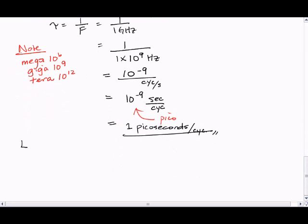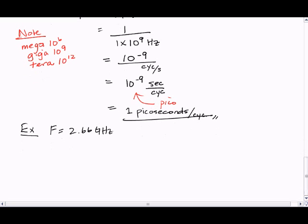Let's do another example where the frequency is 2.66 GHz. This is an actual frequency of one of Intel's processors. The clock period is 1 over 2.66 times 10 to the 9th Hz.